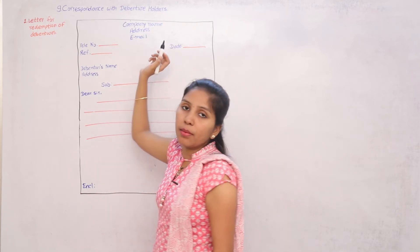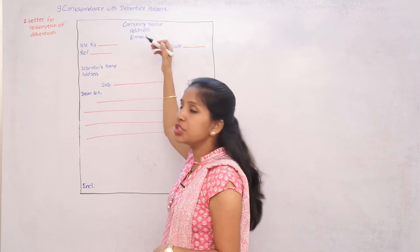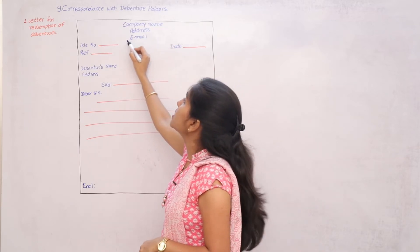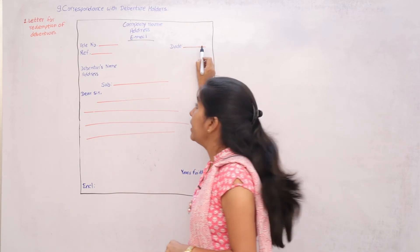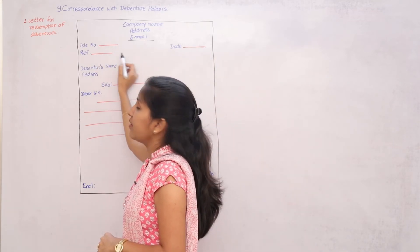As always, the company's name in the middle of the letter, under that the address, then the email address. Again, right-hand side - date. Left-hand side - telephone number, reference number.